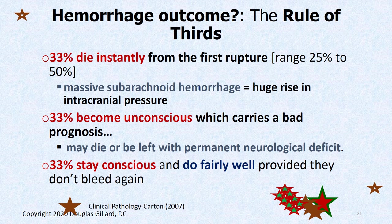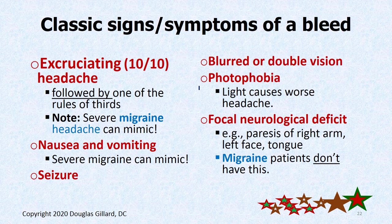The remaining 33% actually stay conscious and do pretty well, as long as there are no multiple aneurysms and it doesn't occur again. So the rule of thirds: one-third die immediately, one-third lose consciousness with uncertain outcome, one-third remain conscious and have better prognosis.